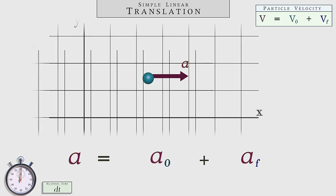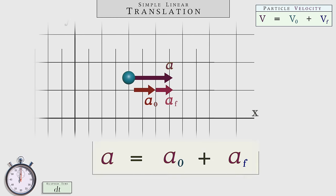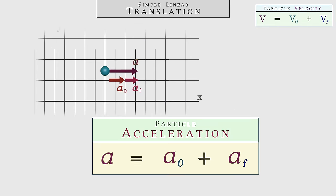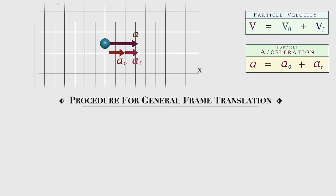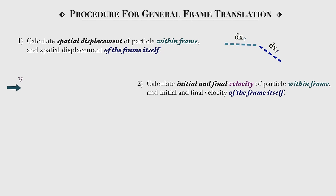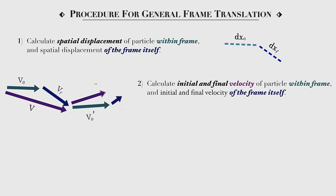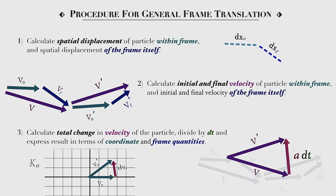Granted, this derivation may seem pretty obvious, as all we're doing is just adding accelerations and velocities. But once we start working with vectors, we can find our equations of rotational motion using this exact same procedure: first calculate the requisite spatial displacements over a small unit of time, then calculate the corresponding velocities over that time period and one immediately subsequent to it, and lastly calculate the acceleration, expressing it in terms of the coordinate and frame quantities.